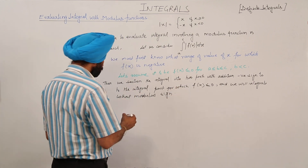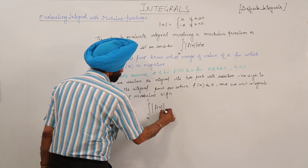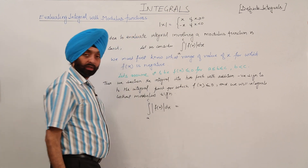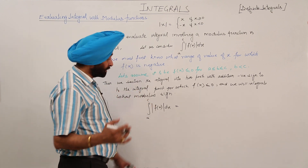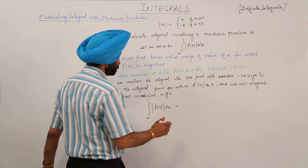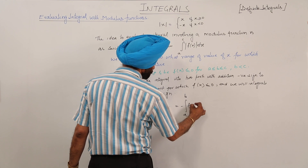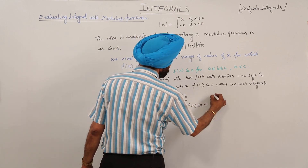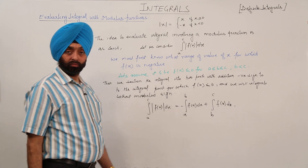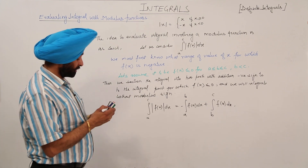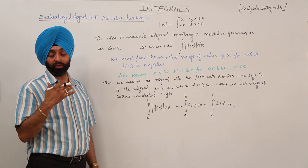Now, the question was the integral from a to c of |f(x)| dx, where b was a limit between a and c making f(x) ≤ 0. So it will be written as: the integral from a to b of negative f(x) dx, plus the integral from b to c of f(x) dx. This is the main theoretical result, and now I am going to give you a very nice example.